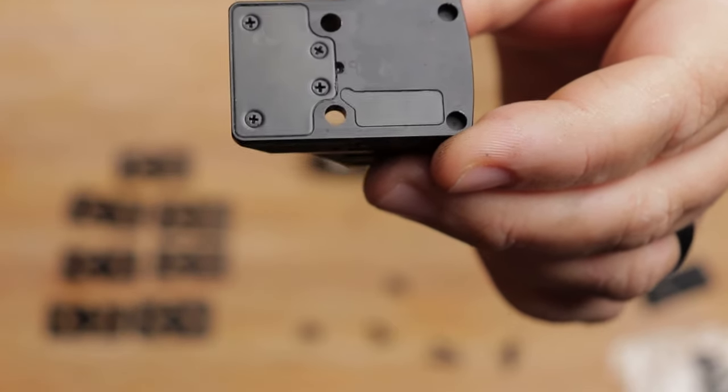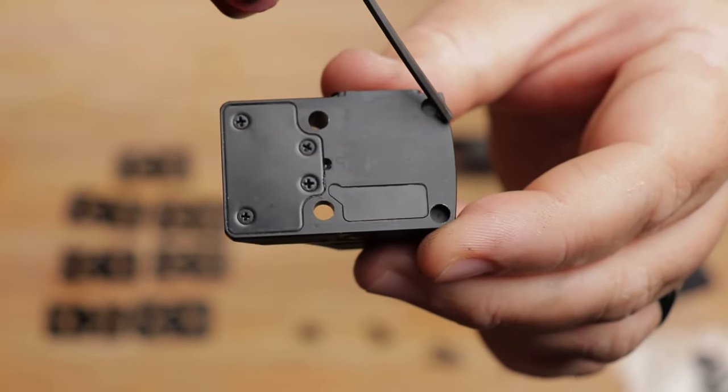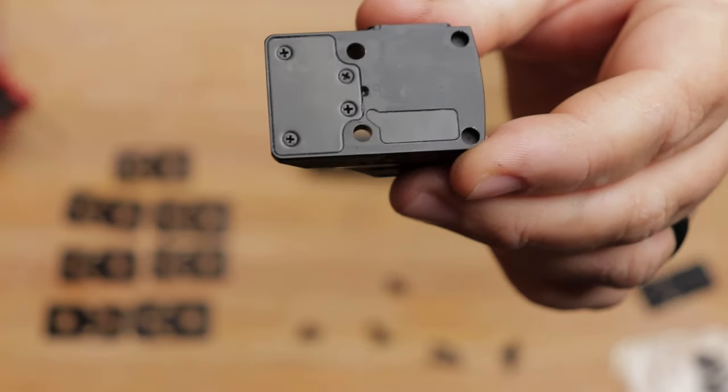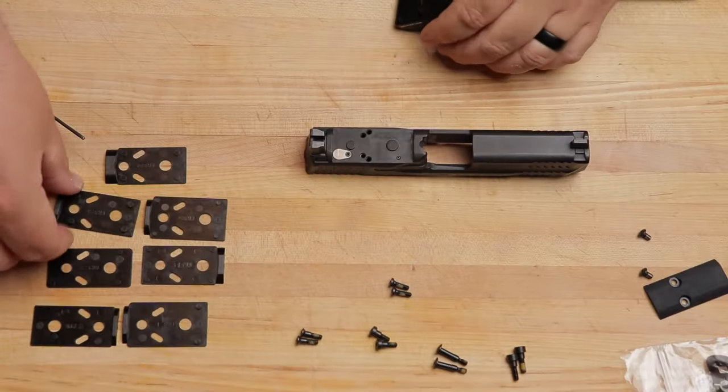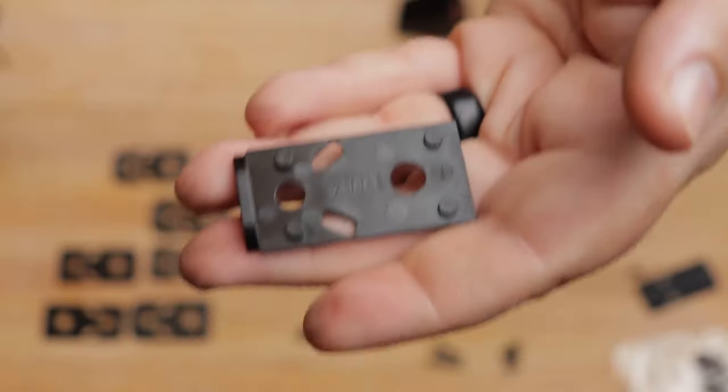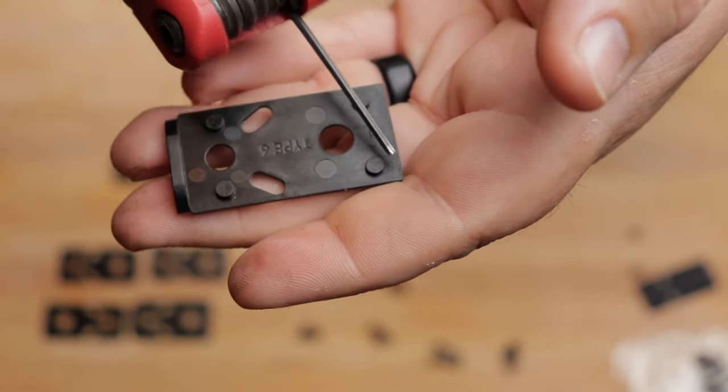So, what the footprint is, is basically where the holes, in this case, I'm gonna call these the socket holes. They're not ones that pass through. And then you have the holes, where the screws go through to mount the optic to the pistol.